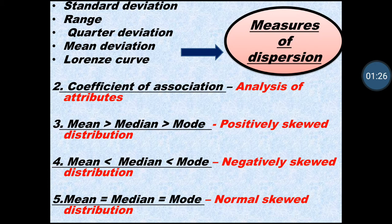When mean, median, and mode are all equal, there is a normal distribution. In the exam, they can ask: if mean is greater than mode, the answer is positively skewed distribution. If mean is less than mode, the answer is negatively skewed. If they ask mean is greater than median, the answer will be negatively skewed distribution.